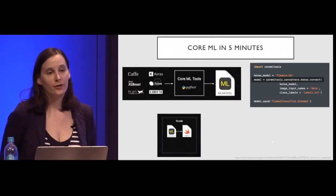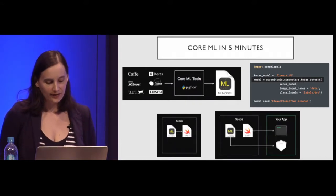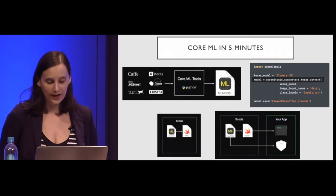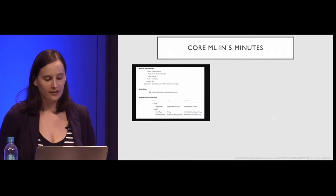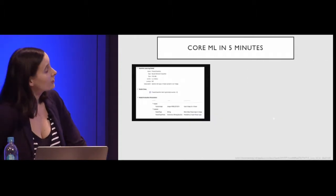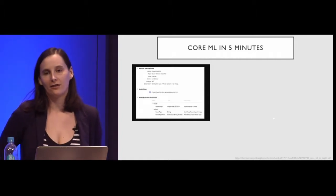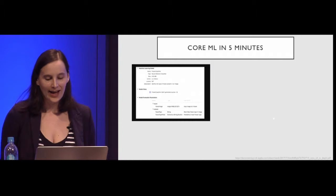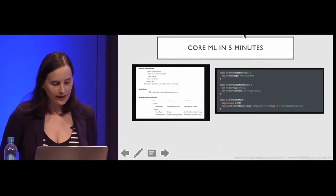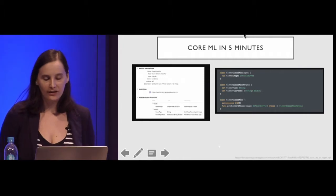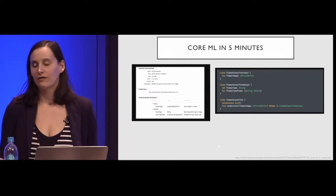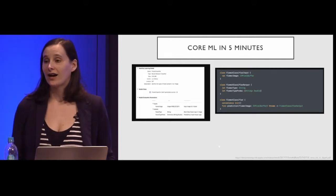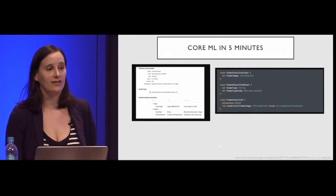Once you get your ML model file and drop it into your app, it generates a Swift class automatically, and you've got it as an executable. You can see things like the model name, licensing, and a description of the input and output parameters. Clicking the file name shows nicely generated Swift interface code — the idea is that you deal with the model as another bit of code, as though somebody else had written it in Swift for you.